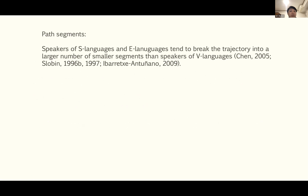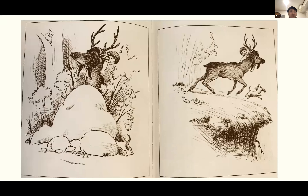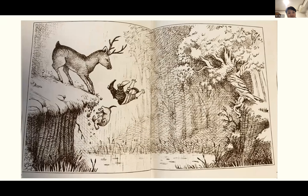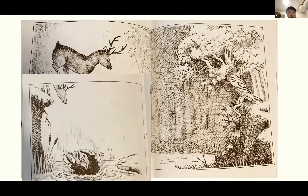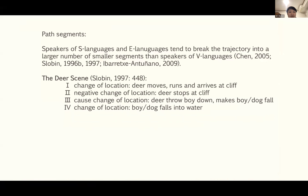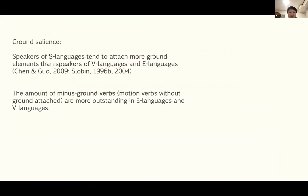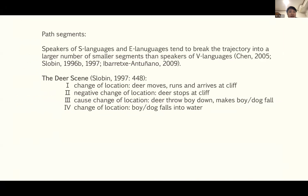For path segments, speakers of S-languages and E-languages tend to break the path trajectory into a larger number of smaller segments than speakers of V-languages. For example, in the famous frog story, a deer gets angry, rushes to a cliff, and throws the boy off into a pond — this trajectory can be broken into four path segments, but V-language speakers tend to constrain this, narrating it in fewer, more general segments.